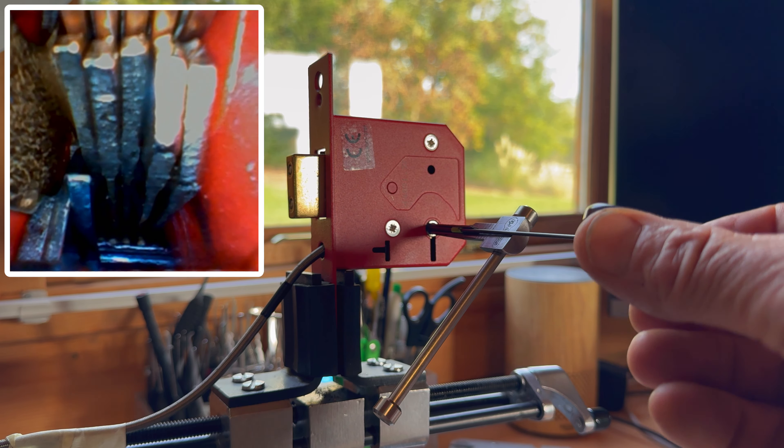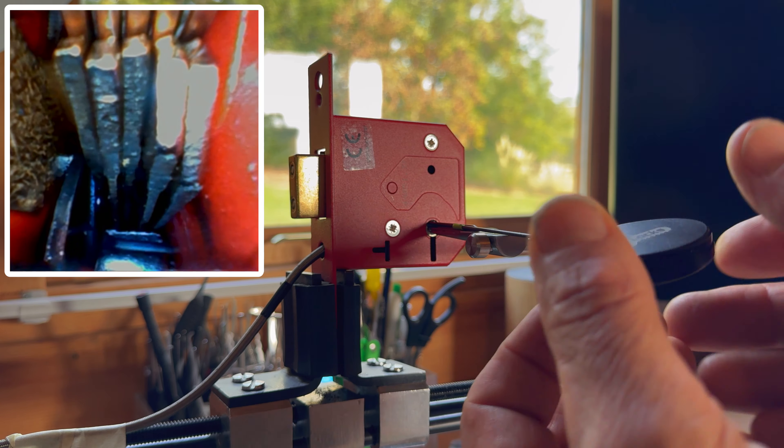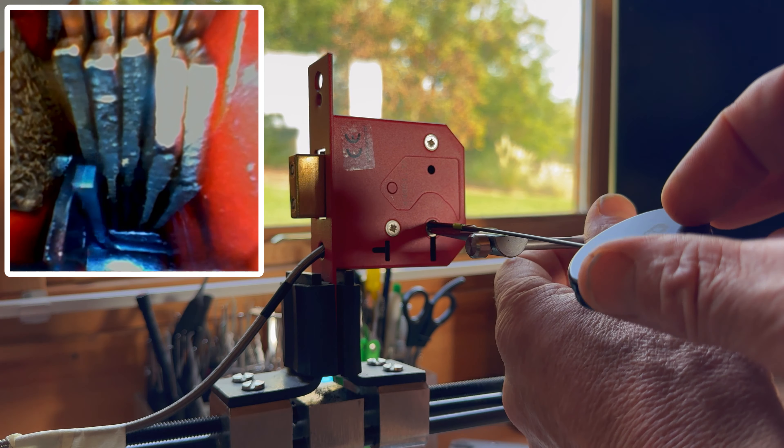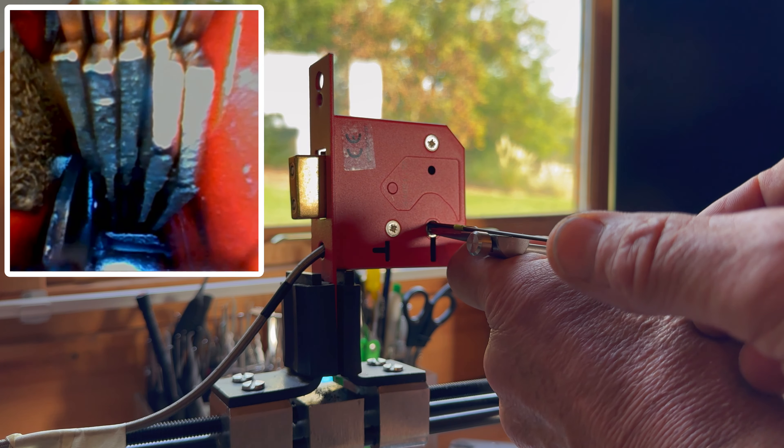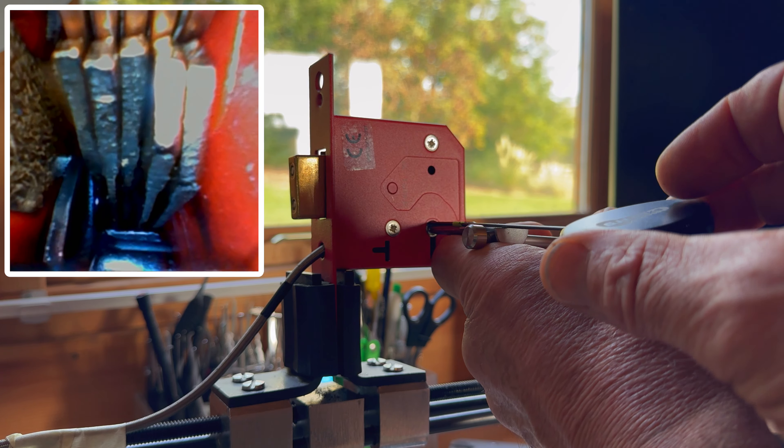But because there's no anti-pick on this, normally it's a case of picking. This is the GJ Locks universal gauge pick, the new one. What I'm going to do is apply medium tension to this.